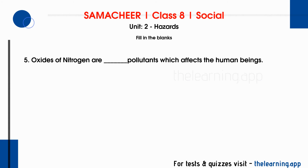Fifth question: oxides of nitrogen are dash pollutants which affect human beings. The correct answer is primary pollutants. Nitrogen oxides are primary pollutants that affect human beings.